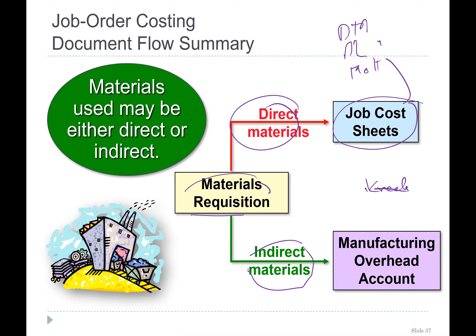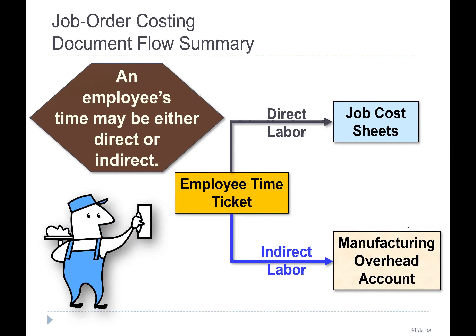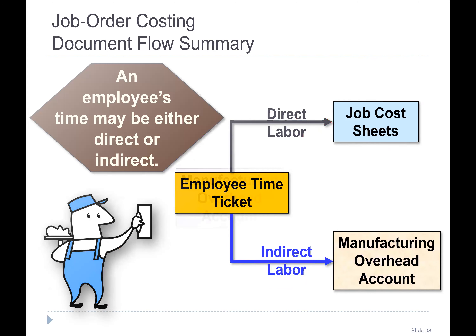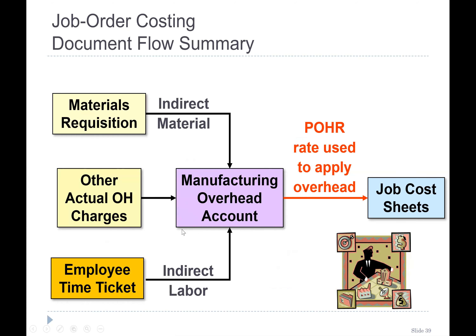Indirect material comes from the material department but goes to the manufacturing overhead account. Similarly, employee time tickets: if it's direct labor, it goes directly to the job cost sheet. Indirect labor — supervisors, security guards, janitors — their time tickets go to manufacturing overhead.